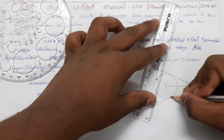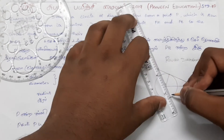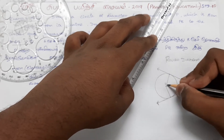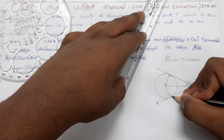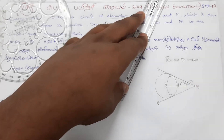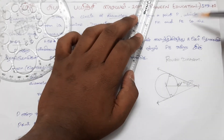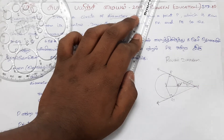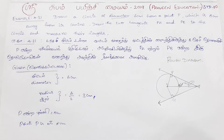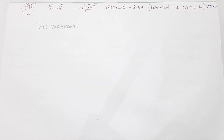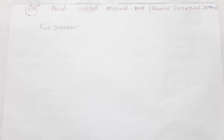The tangent will touch the point on the circle at a 90-degree angle. The line from P to the center is 8cm. We label the tangent lines PA and PB. The length of the tangent line is 3cm.